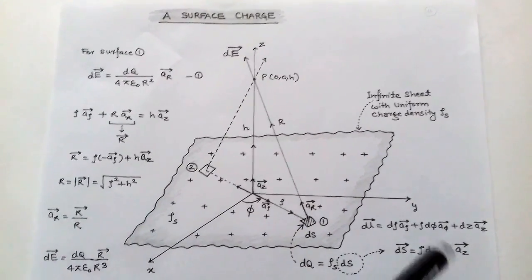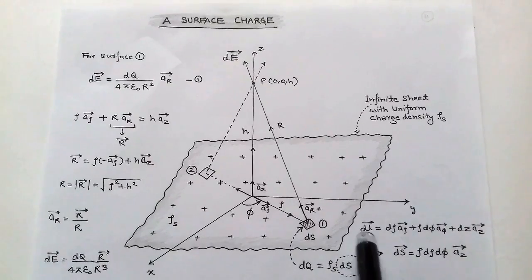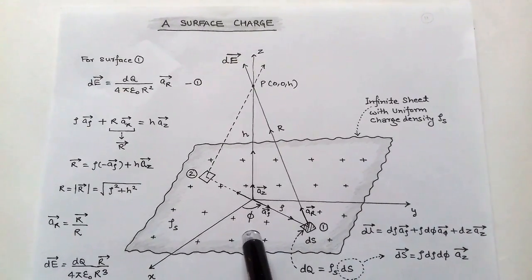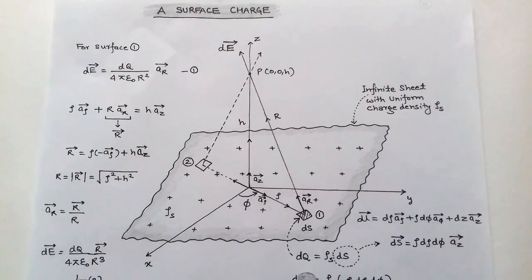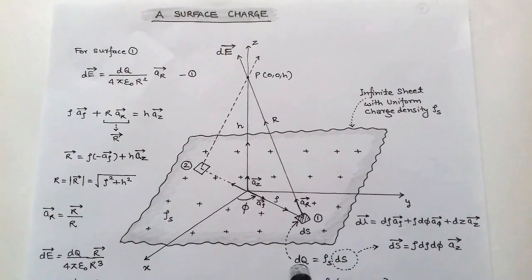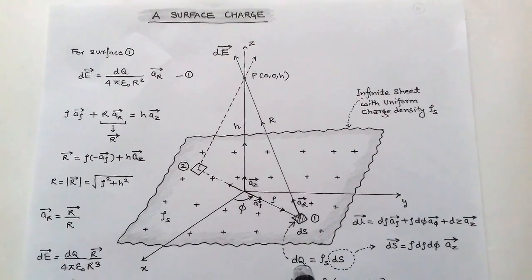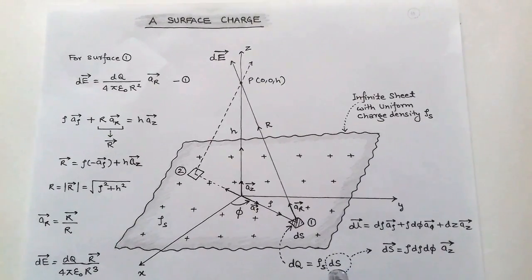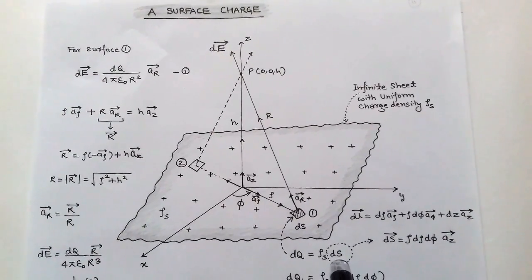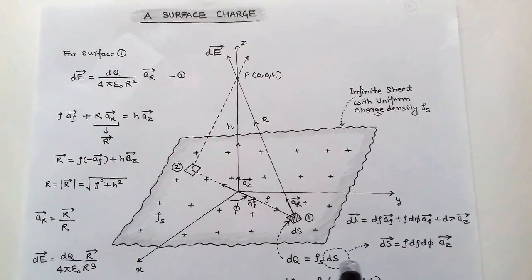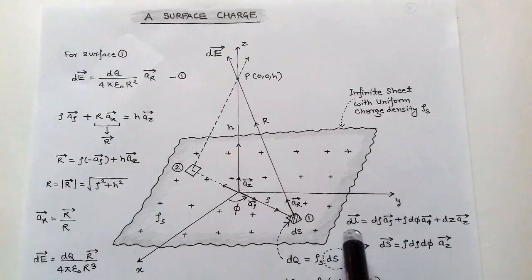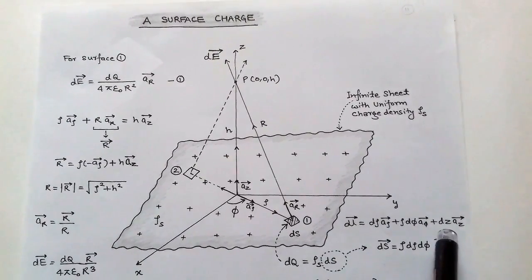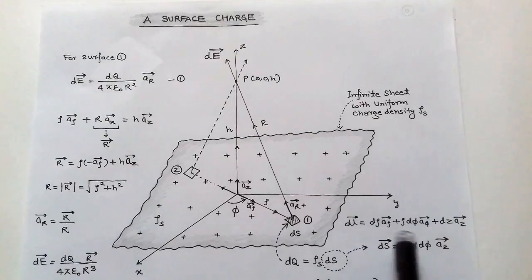Here we consider a circular cylindrical coordinate system. This differential surface ds has a small charge dq, where dq equals ρs times ds. The value of ds can be calculated using the differential length in the cylindrical coordinate system.